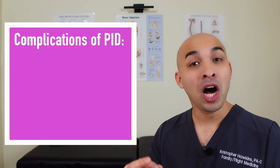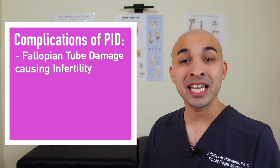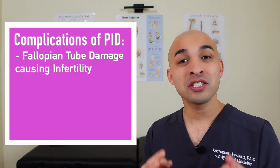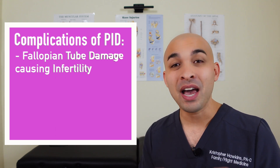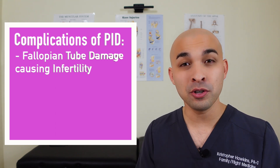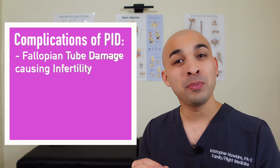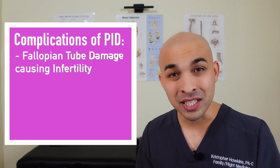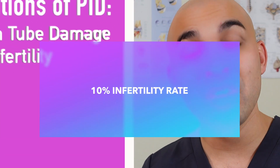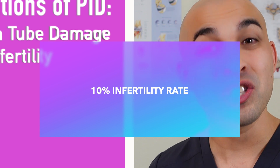The first complication of pelvic inflammatory disease is fallopian tube damage leading to infertility. The infection scars up the fallopian tube, causing blockage so the egg cannot get through to the uterus. This causes infertility — and 10% of women could become infertile due to pelvic inflammatory disease. This is huge.